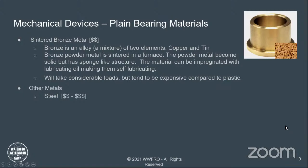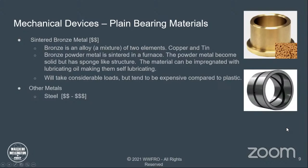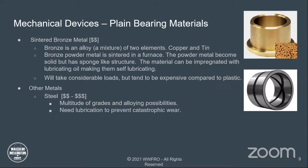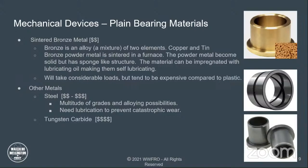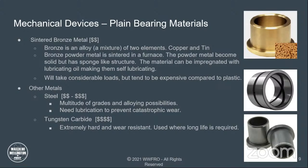Other metal options include steel, which is a bit more expensive. Here's a steel bushing with lubrication grooves ground into it. There are a multitude of grades of alloying steels possible, and they need lubrication to prevent catastrophic wear. Tungsten is a unique and expensive material — extremely hard and very wear-resistant. It's used where long life is required, though it's hard to machine.